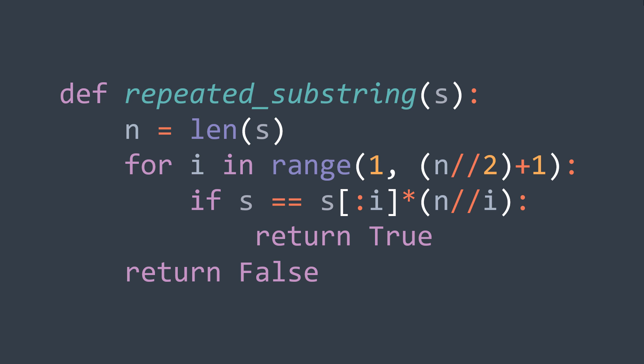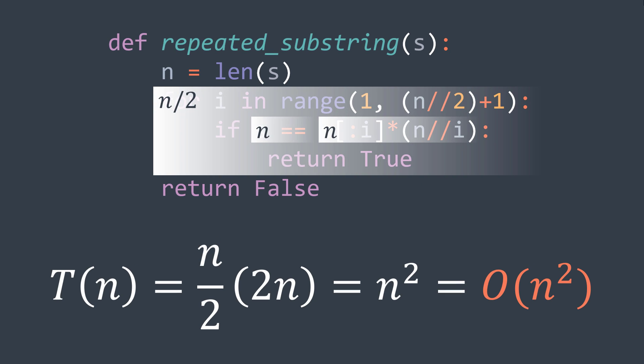The problem with this solution is that it's slow. The loop does n/2 iterations, and at each iteration we have O(n) for repeating the prefix and O(n) for comparing with s. The time complexity is O(n²) where n is the length of the input string. Fortunately, we have more optimized solutions.